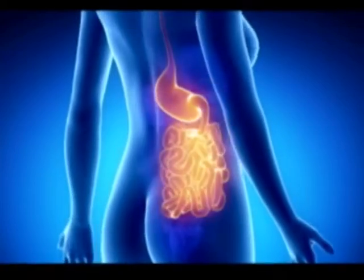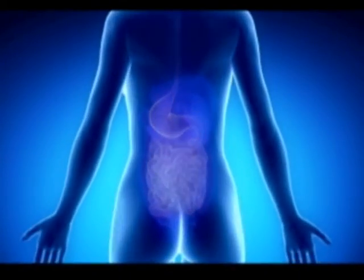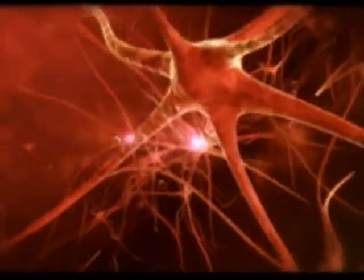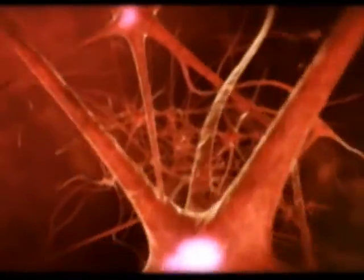Neurons are cells that communicate using electrical and chemical signals. Generally, we think of neurons as being confined to the brain or other specialized areas like the eyes or ears.